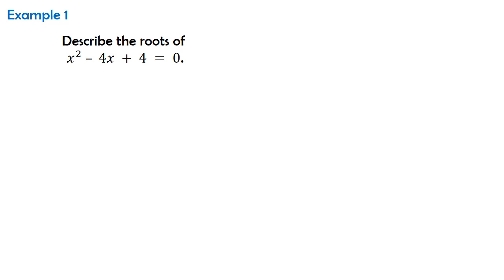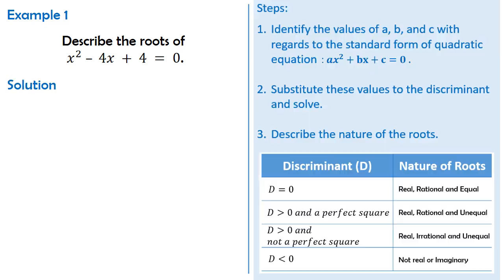For the solution, we have to follow these super simple steps. Step 1: identify the values of a, b, and c with regards to the standard form ax squared plus bx plus c equals zero. So here we have a equals 1. Take note that if a variable has no number beside it, it means its coefficient is 1. And then b is equal to negative 4, and c equals 4. We are done with step 1.